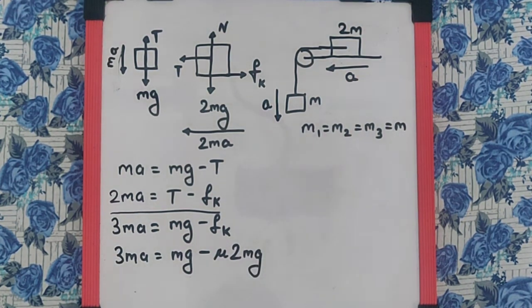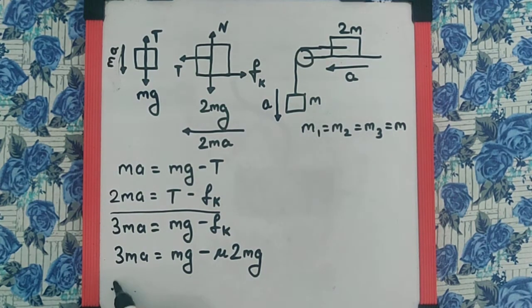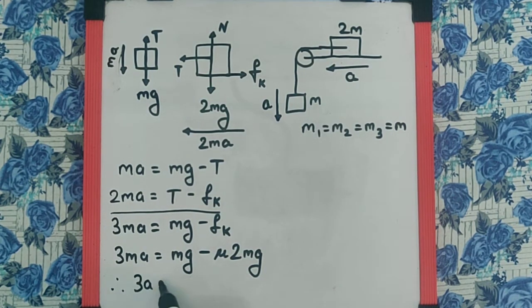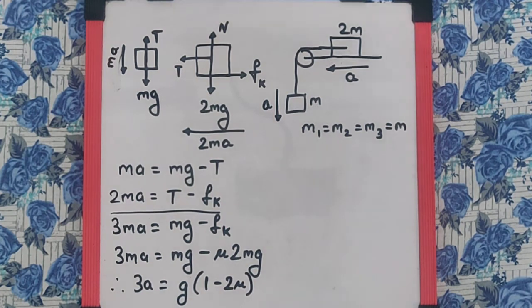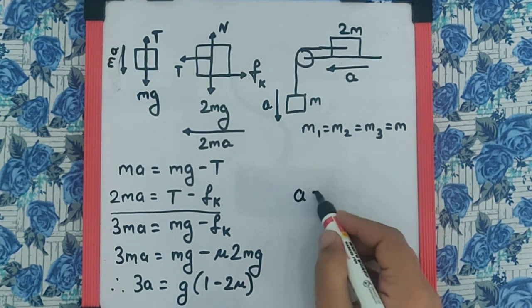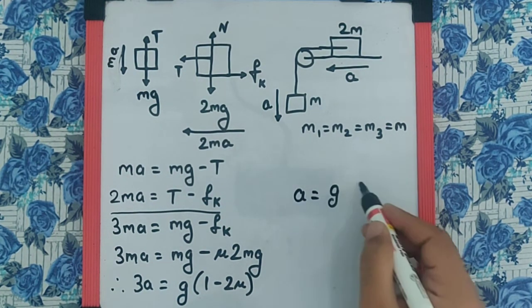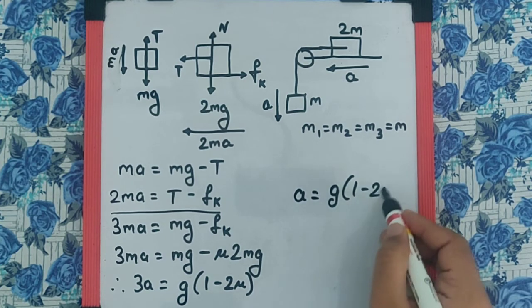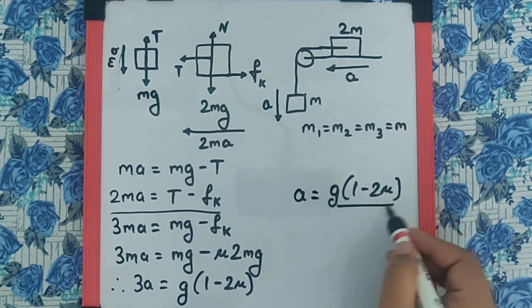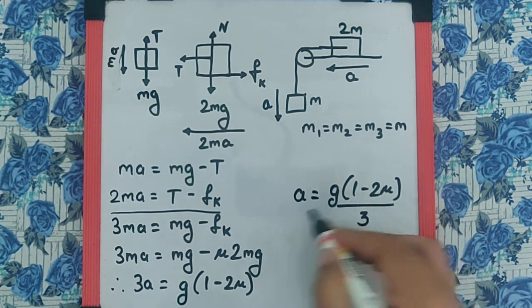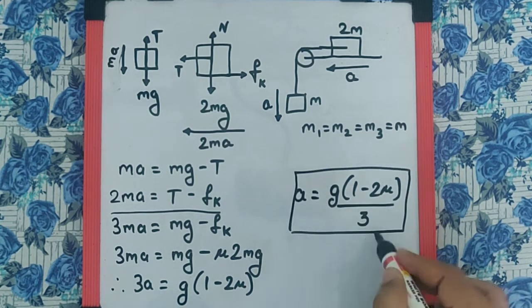M can be cancelled throughout the equation, and we get 3A equals G times (1 minus 2 mu). So the acceleration is going to be G(1 minus 2 mu) divided by 3 as the final answer.